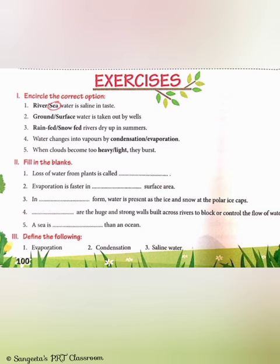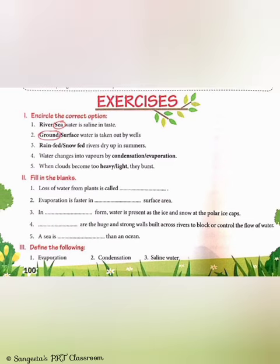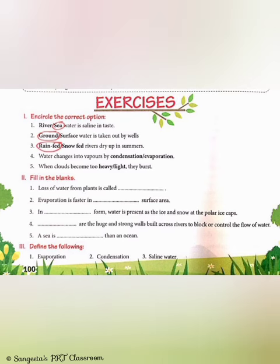Part 2 — Ground or surface water is taken out by wells. The answer is groundwater; groundwater can be taken out by wells, hand pumps and tube wells. Part 3 — Rain-fed or snow-fed rivers dry up in summers. The answer is rain-fed; rain-fed rivers dry up in summers.